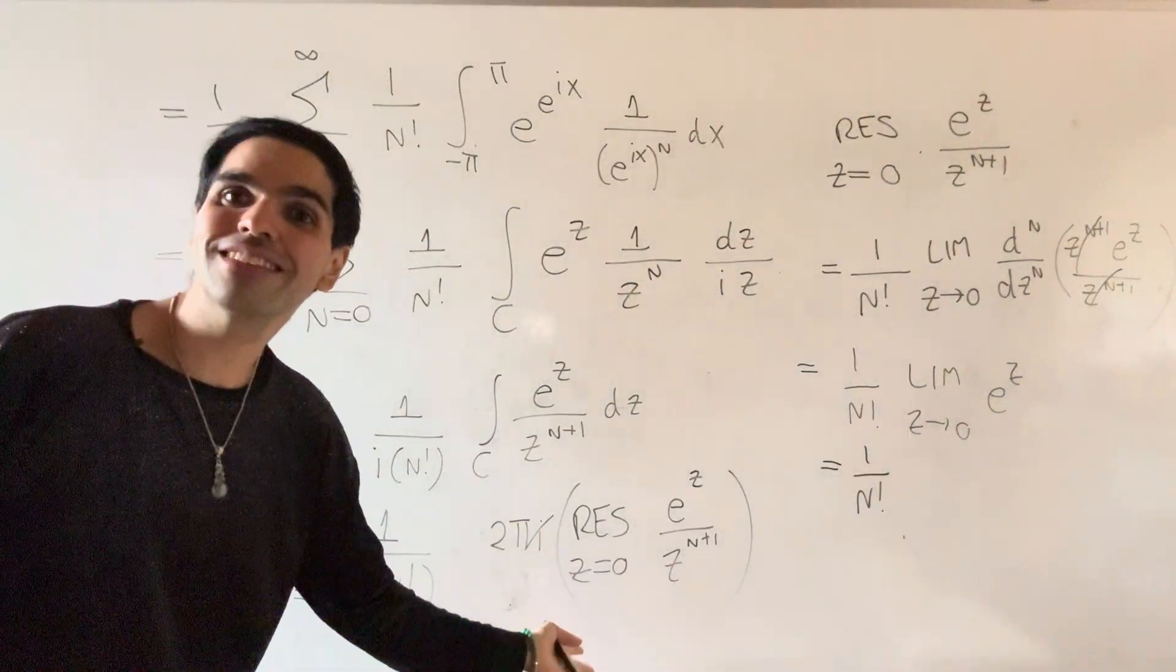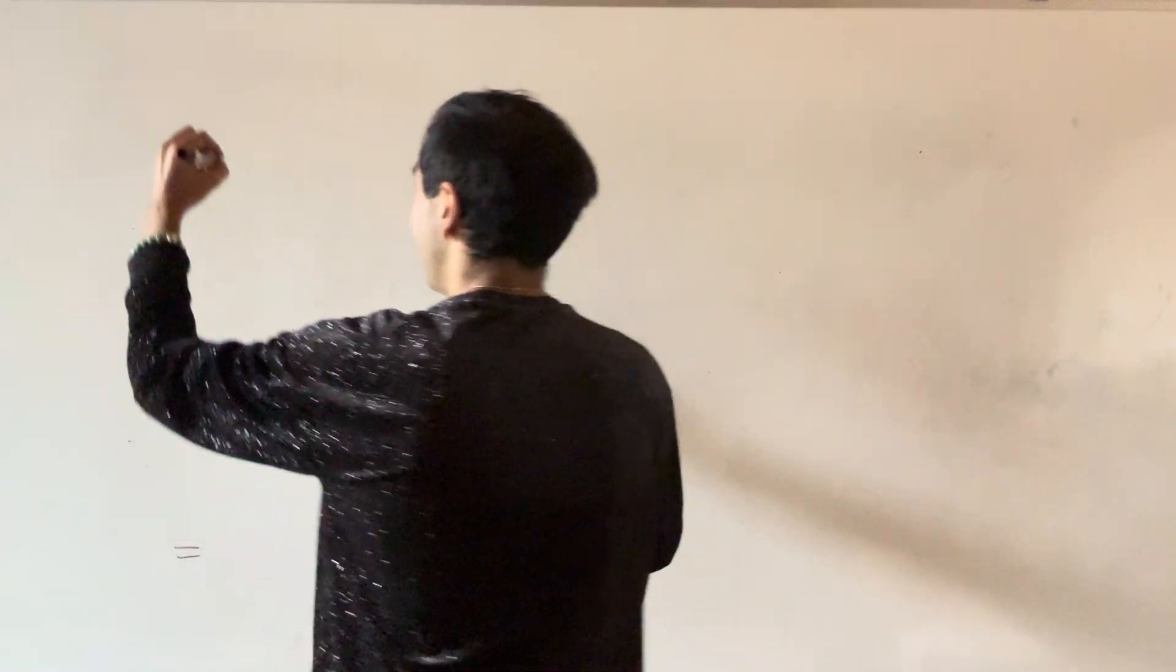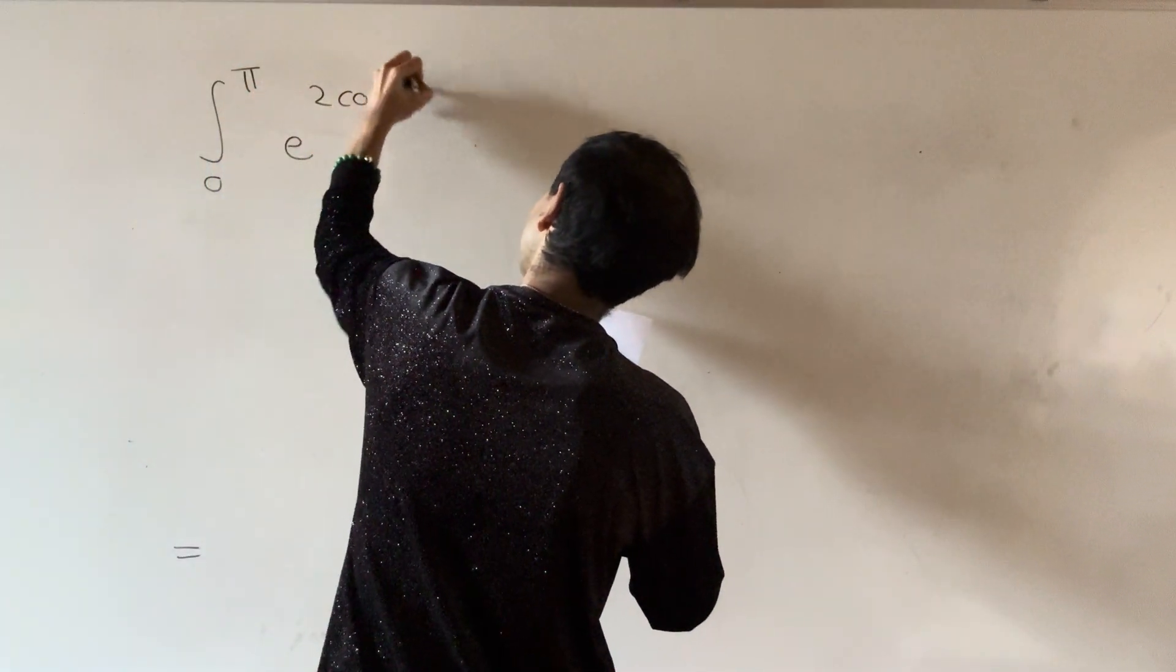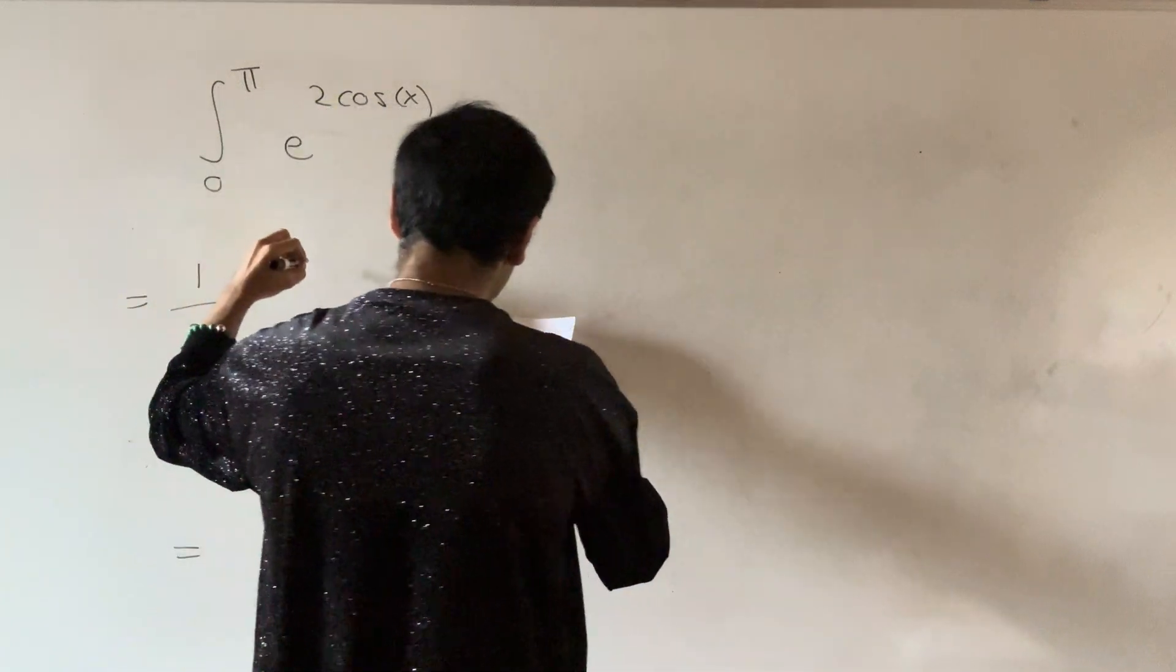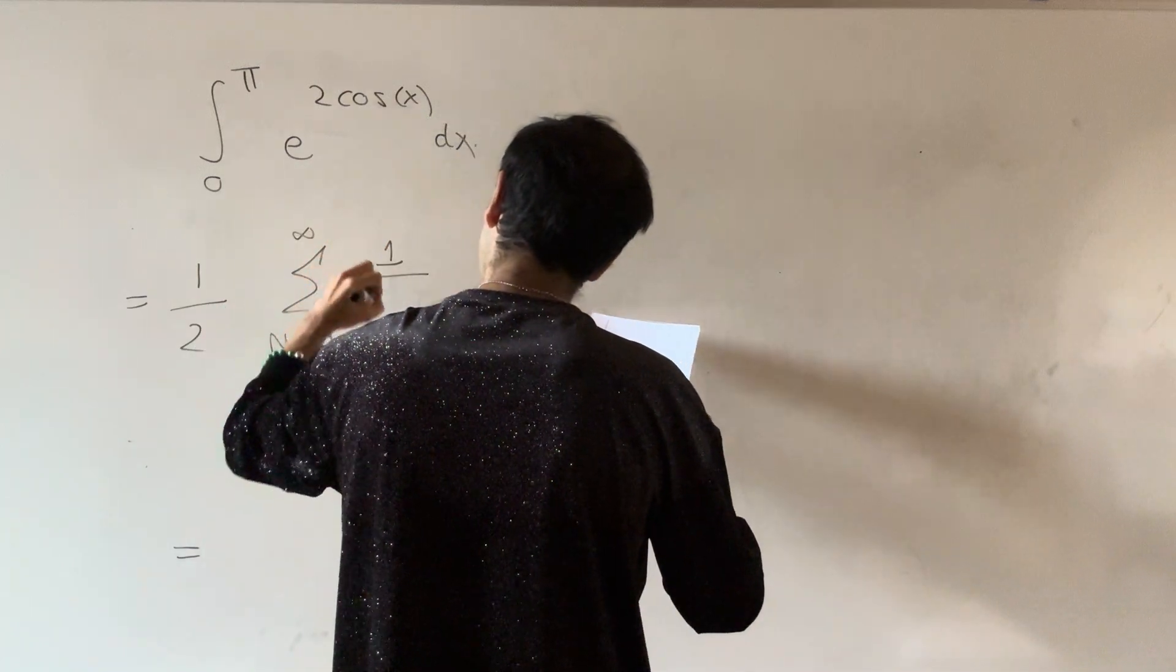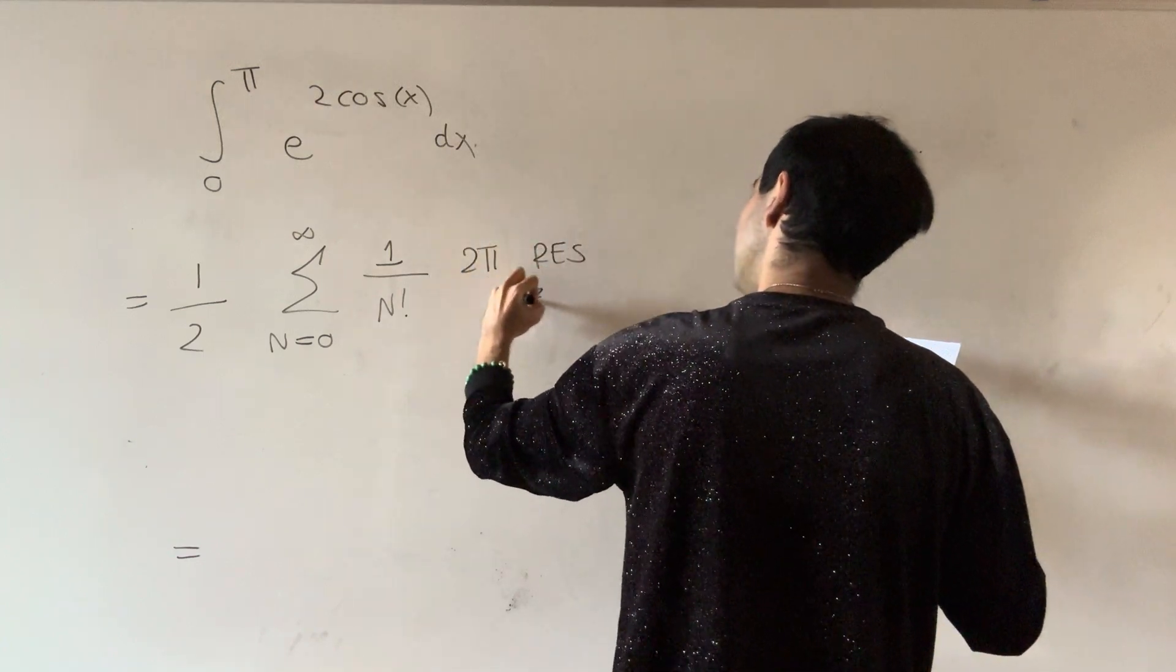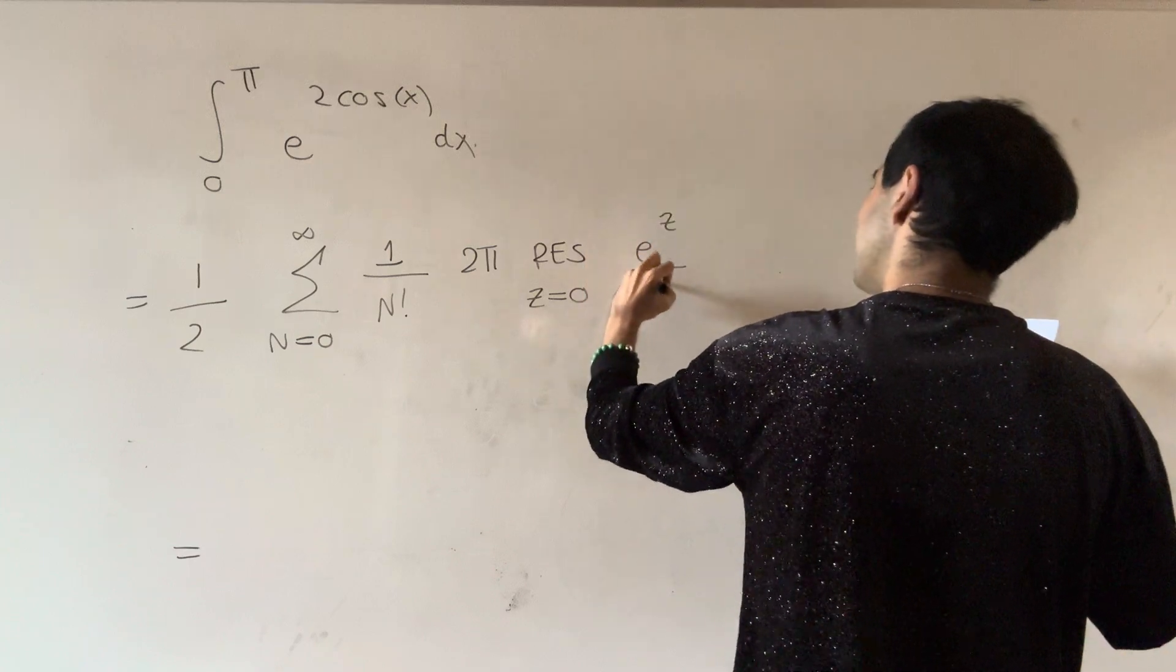So, all we need to do is plug this in, and then see what we get. So, now, this is our grand finale. So, the integral from zero to pi, of e to the two cosine x dx. What did we get so far? That was one half, times the sum, from n from zero to infinity, of one over n factorial, and then two pi, times the residue, at z equals zero, of e to the z, over z to the n plus one.